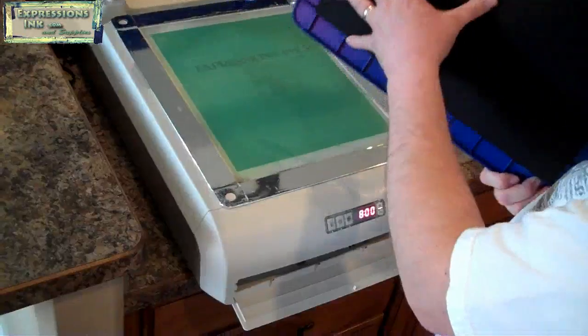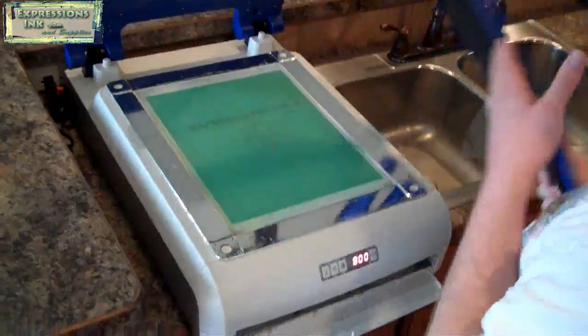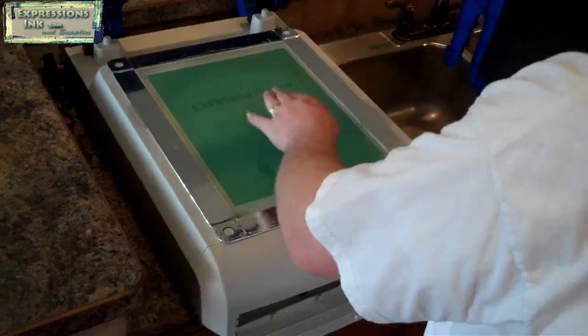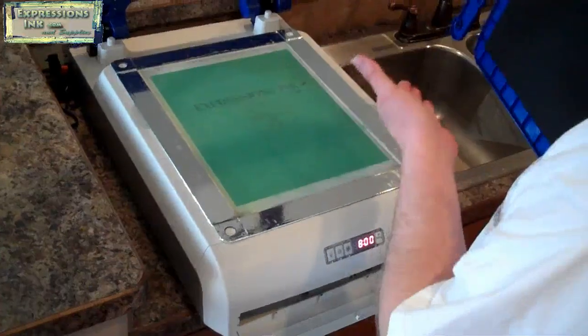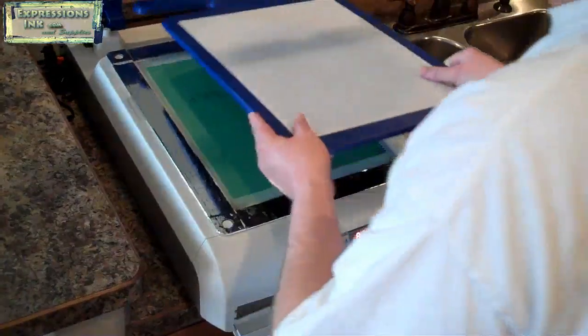Then we'll take our adult platen that has this foam back here that helps to push everything down and get a nice tight fit of your transparency onto your emulsion. We'll place that over the top.